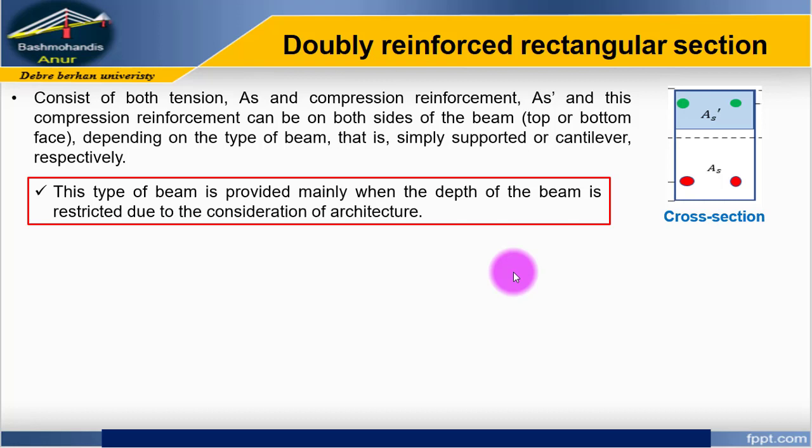When do we use a doubly reinforced section? This type of beam is used mainly when the depth of the beam is restricted due to architectural considerations. When the depth is restricted, the moment capacity is also limited. For example, if the applied moment is greater than the moment capacity of the cross section, we have to provide additional area of steel.